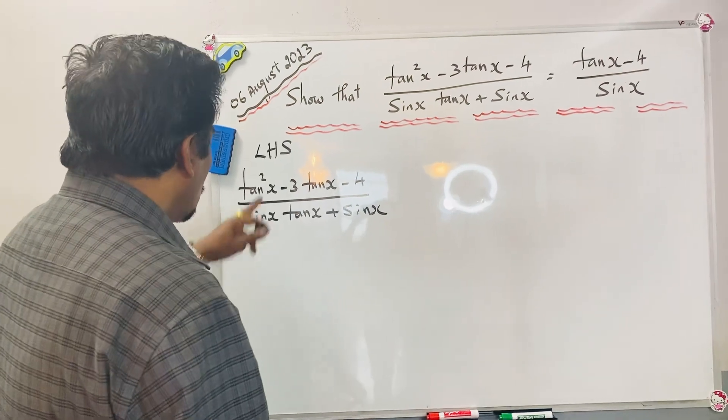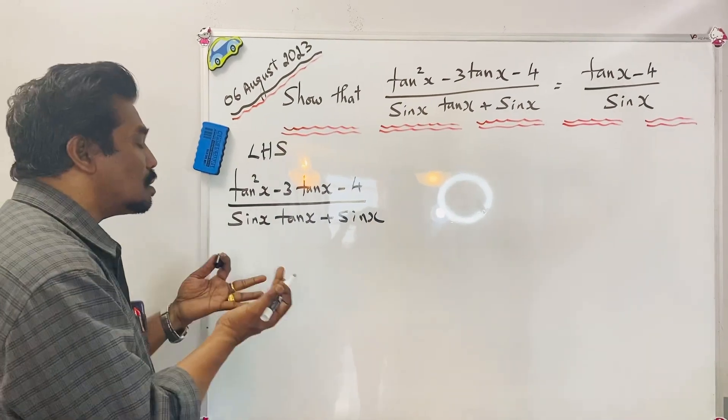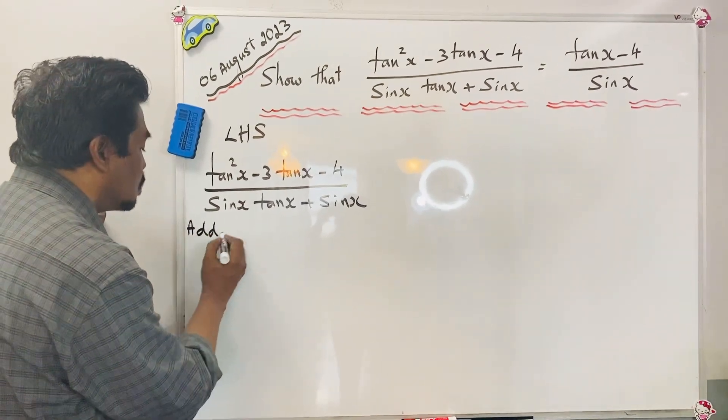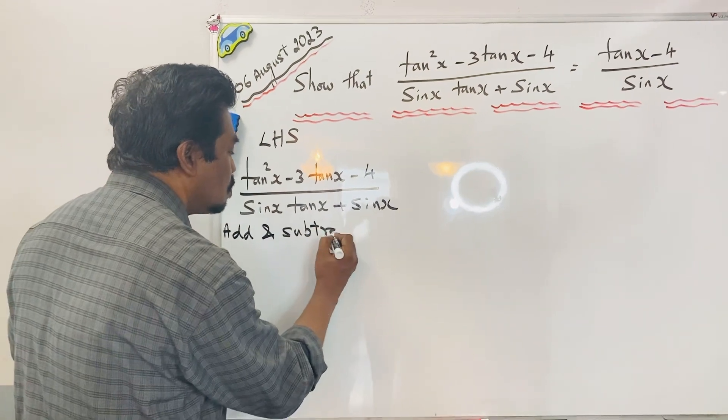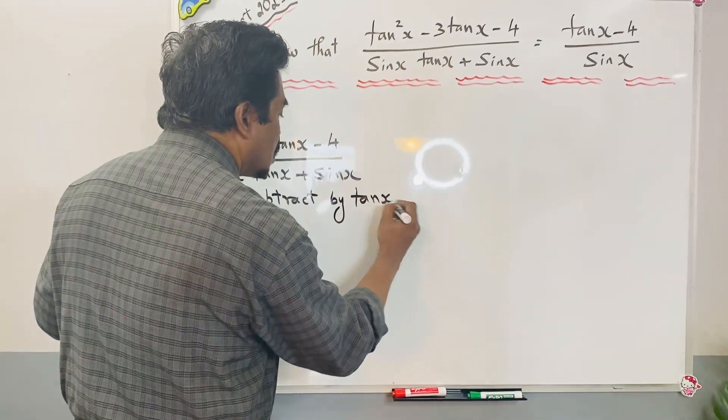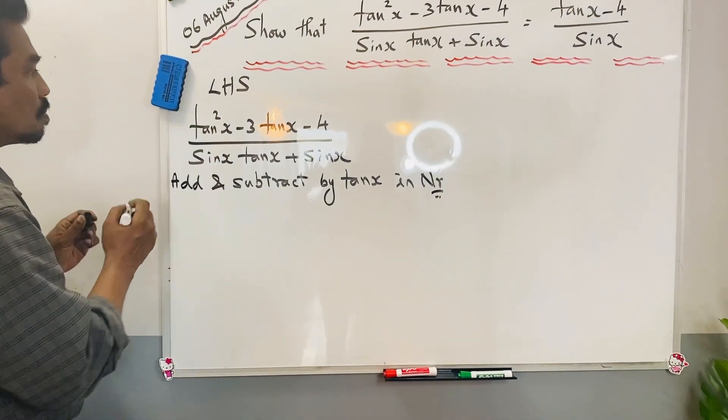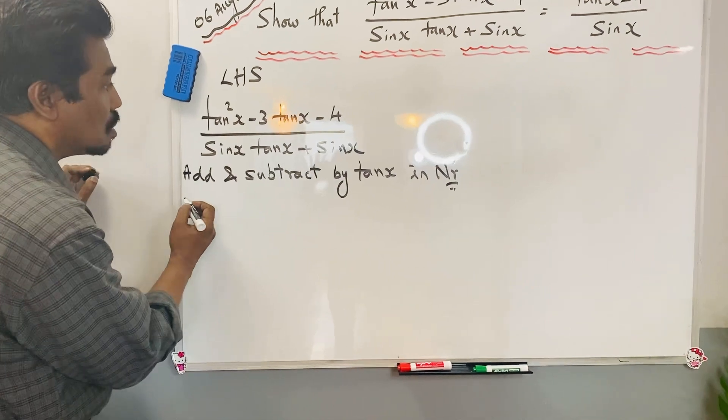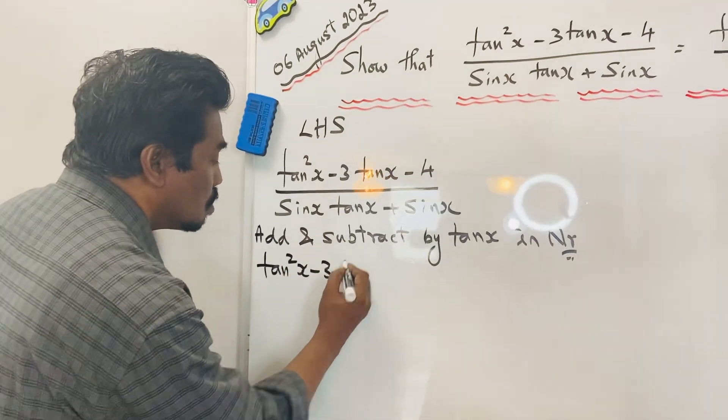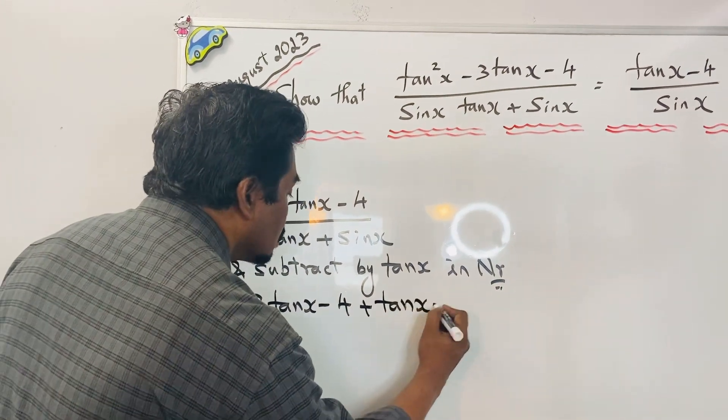So what we have to do here in the numerator term, just add and subtract tanx so the value will not change. Just we are adding tanx and we are subtracting by tanx. It is in the numerator. This is the important manipulation.